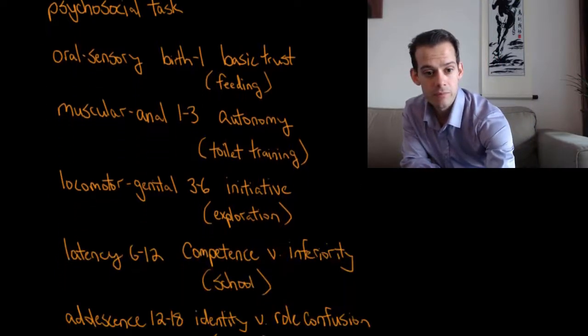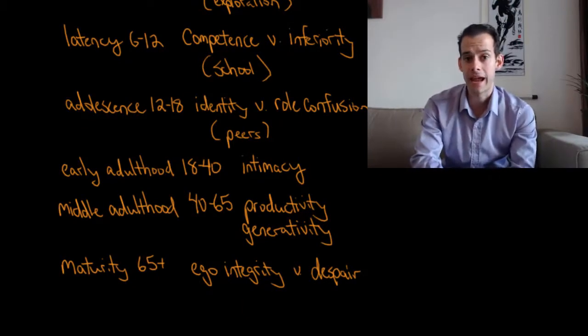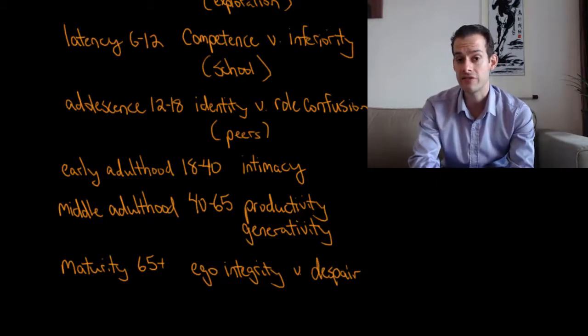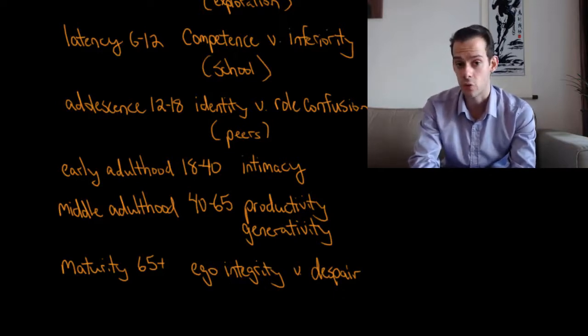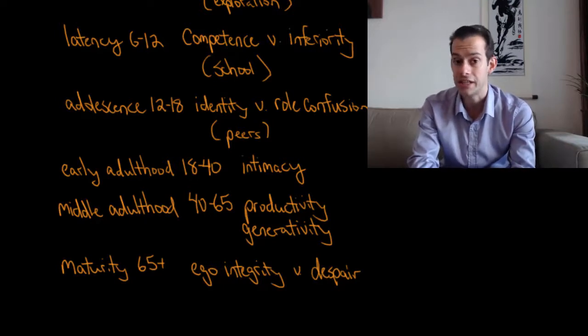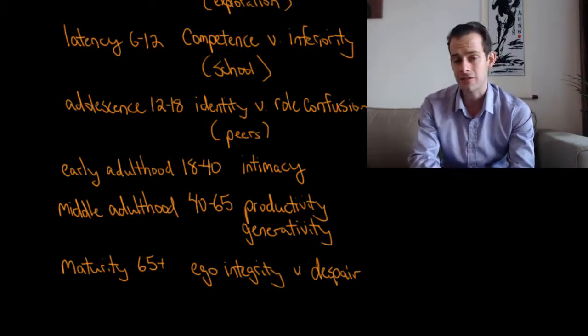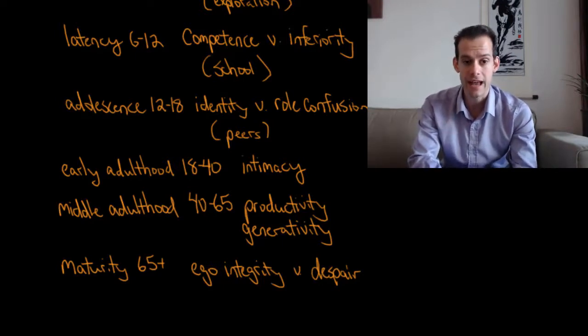Next we move to the latency stage. This is from age six to about age twelve. The main task here is developing either a sense of competence or a sense of inferiority. This is the age where children begin going to school. Erikson thought this is where you learn whether or not you can achieve things. Can you actually accomplish the tasks that people set out for you? If you can, then you'll develop a sense of competence. But if you can't, or you feel that you can't, you might develop a sense of inferiority.